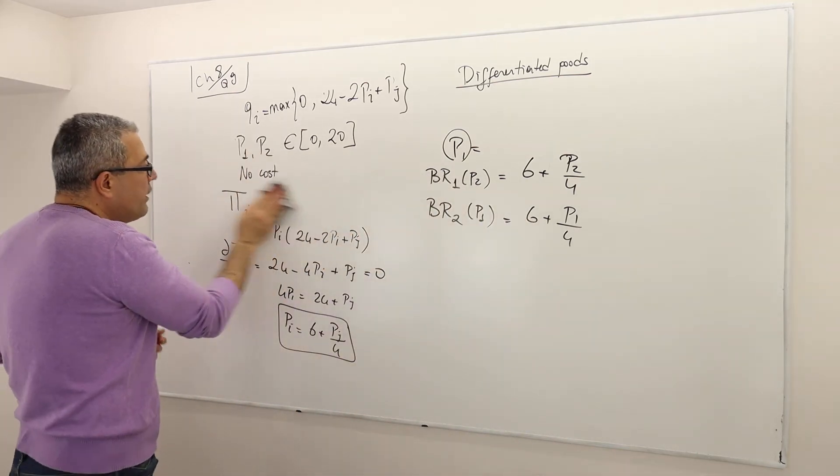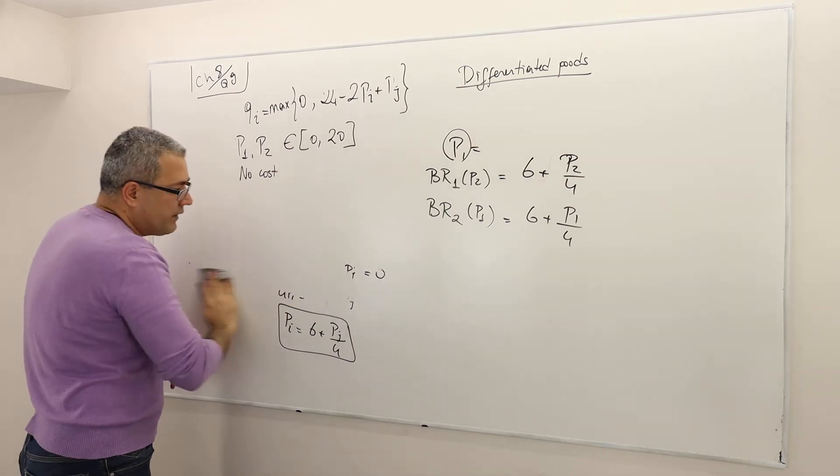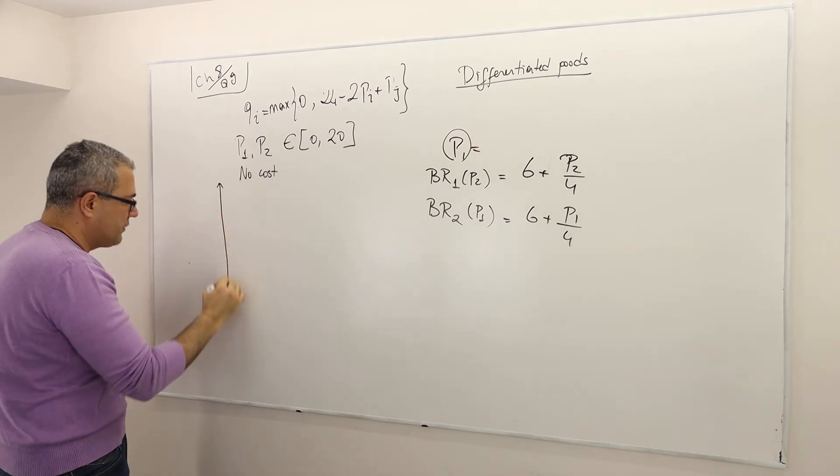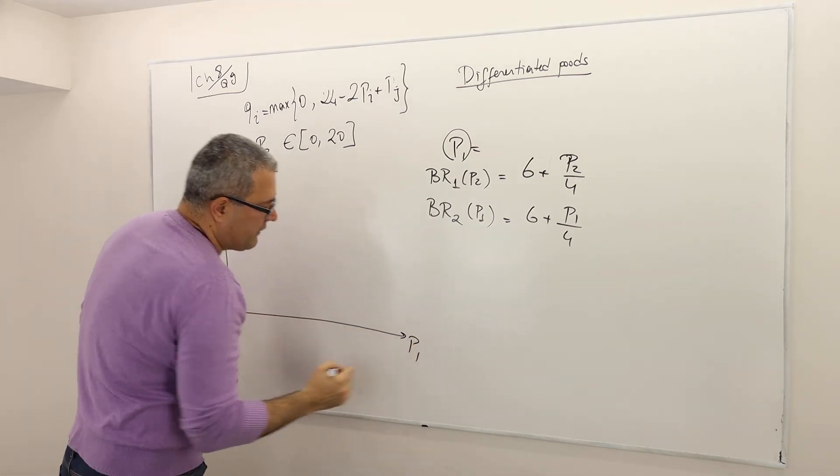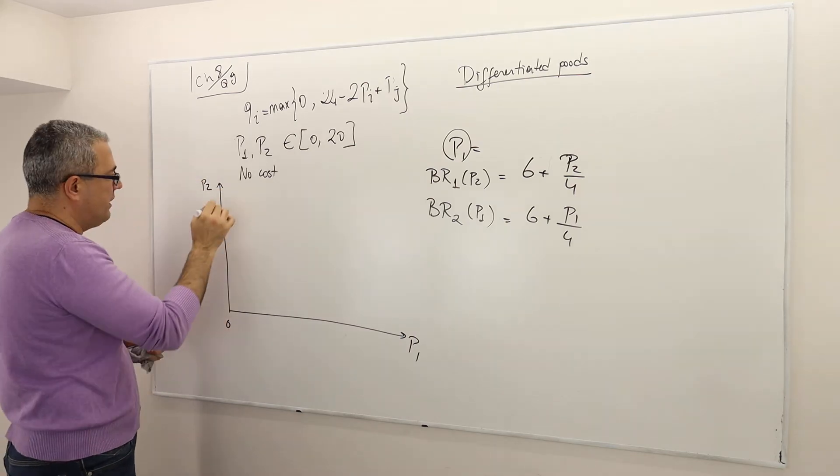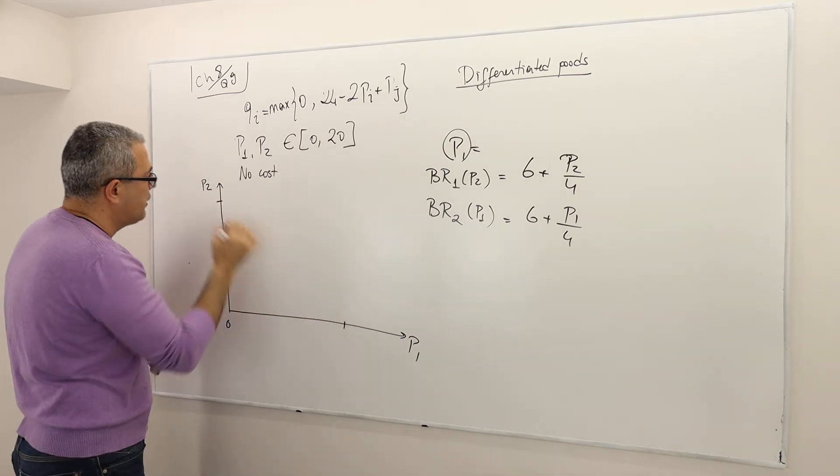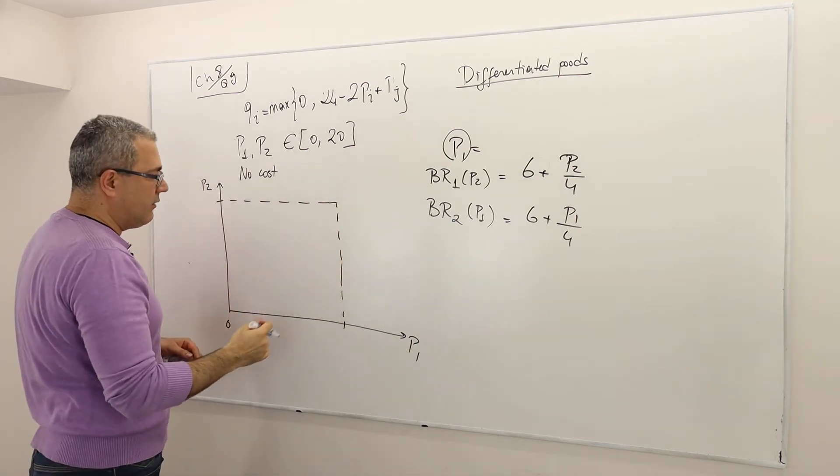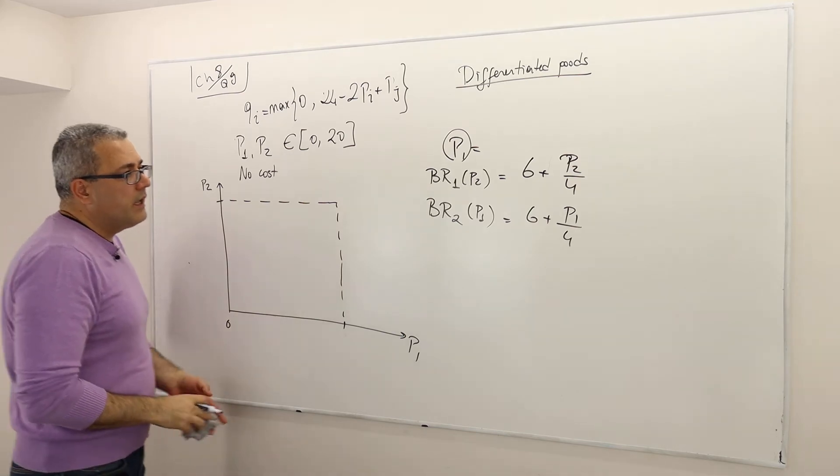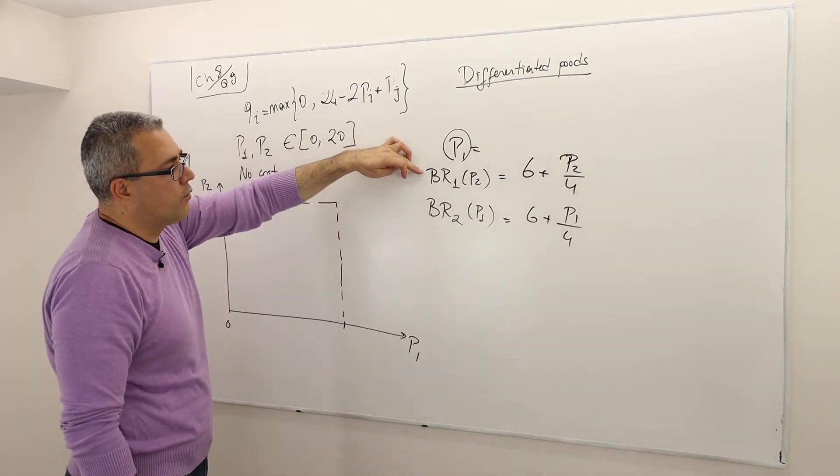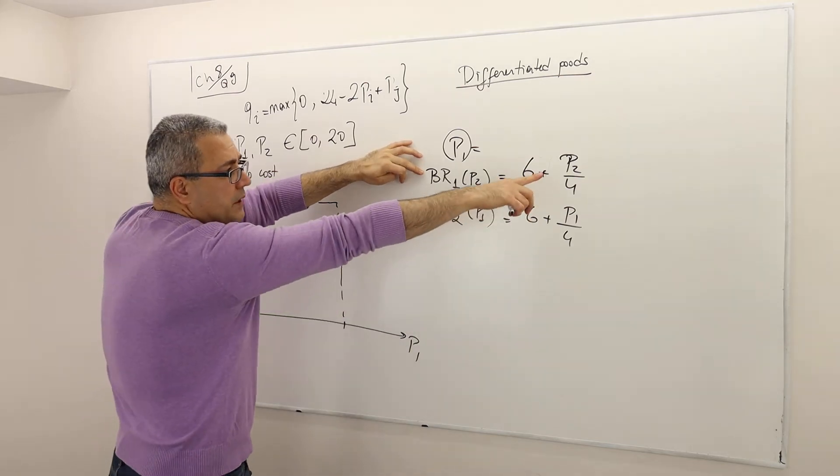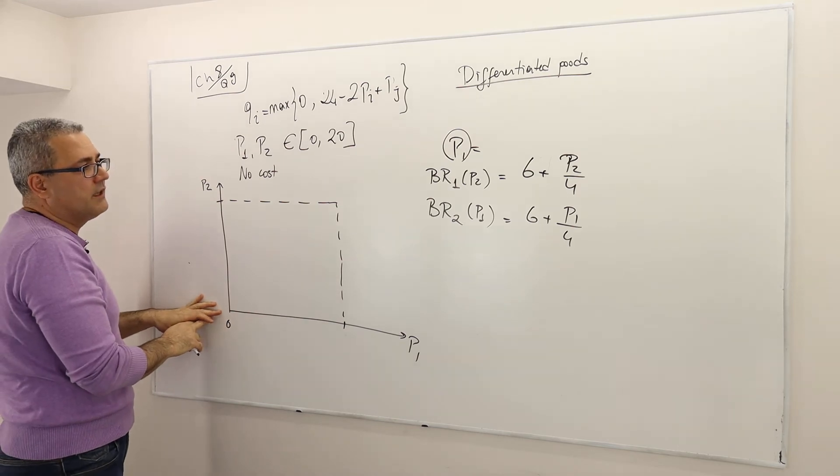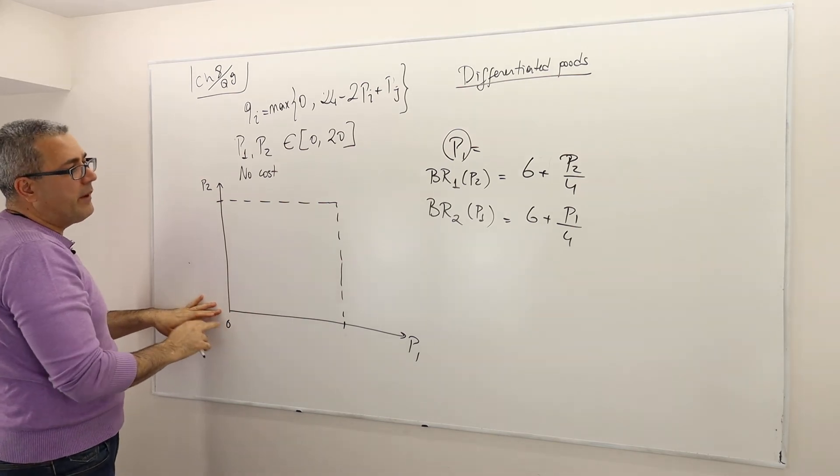We usually put them on p1 versus p2 graph just to see what they look like. So let's call this is p1, this is p2. I know that they have to be in between 0 and 20. So outside of this box, the strategies are not allowed. So here, let's draw the best response for the first firm. So it's a function of p2, but when p2 is 0, which is the lowest price this firm can pick, the best response is 6.